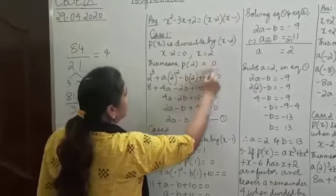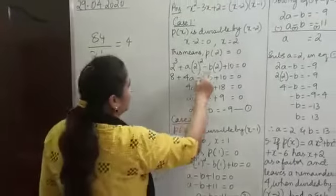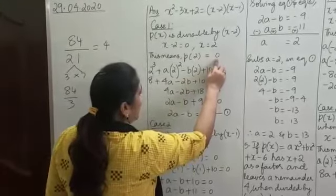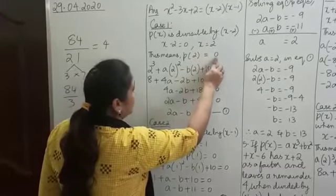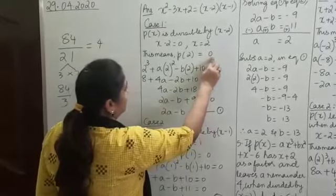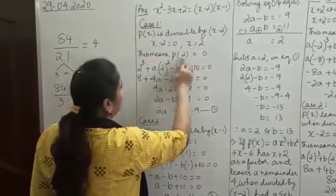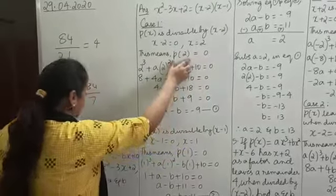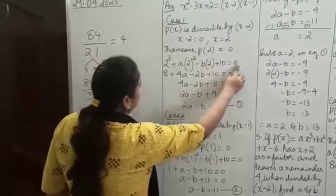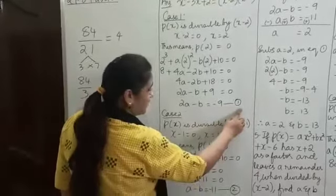If the remainder is 0, we write P of 2 equals 0. The value of the polynomial when X equals 2 is 0 because the remainder is 0 — and the remainder is 0 because it is exactly divisible. In the polynomial P of X, replace X with 2. On working this out, we get the equation 2A minus B equals minus 9. That is our first equation.